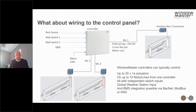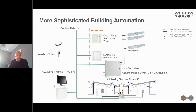Our MotorLink controllers are network enabled and can be easily integrated into the BMS via BACnet, Modbus, or KNX. In the biggest smart buildings, the overall system is much more sophisticated — controllers sit on a controls network with a system panel or head end monitoring each zone using sensors in the spaces and optimising window positions in each group according to ventilation demand and weather conditions.